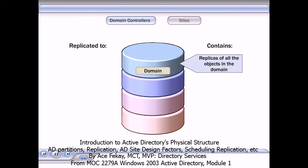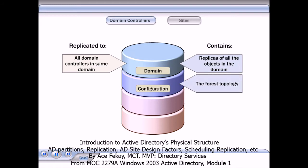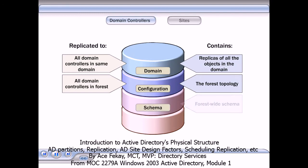The domain partition is replicated only to other domain controllers in the same domain. The configuration partition contains forest topology — a record of all domain controllers and the connections between them in a forest. The schema partition contains the forest-wide schema. Each forest has one schema so that the definition of each object class is consistent.